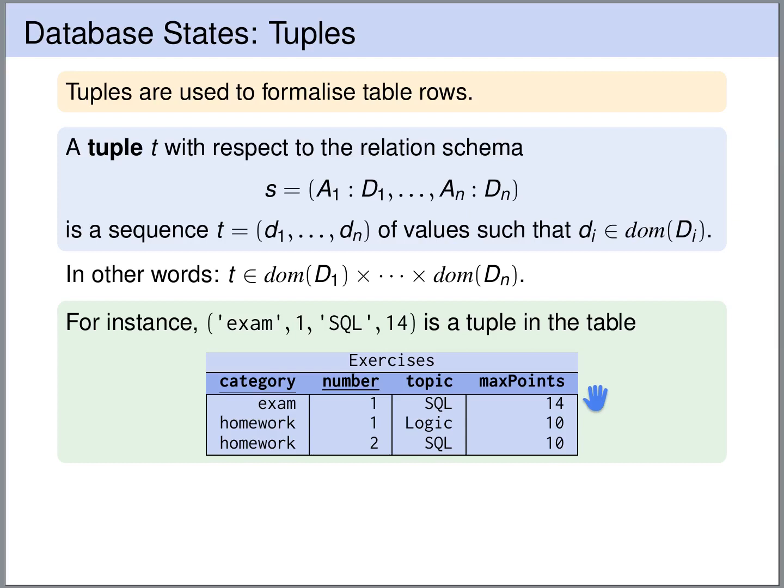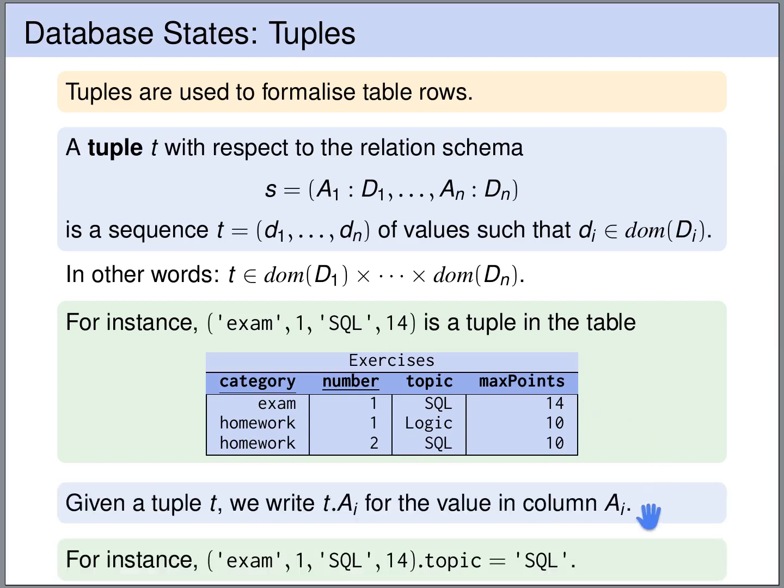If we have such a tuple and we have the name of an attribute A_i, then we write T.A_i for the value of this tuple in column A_i.